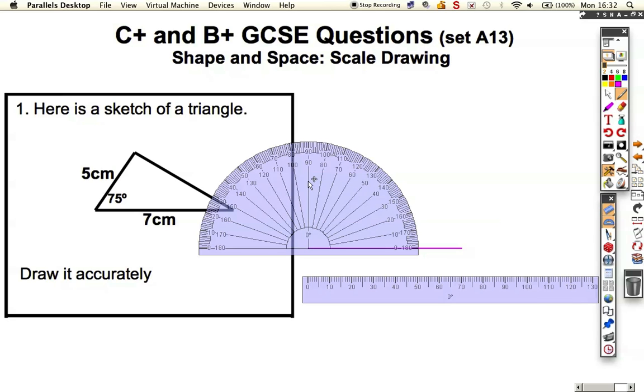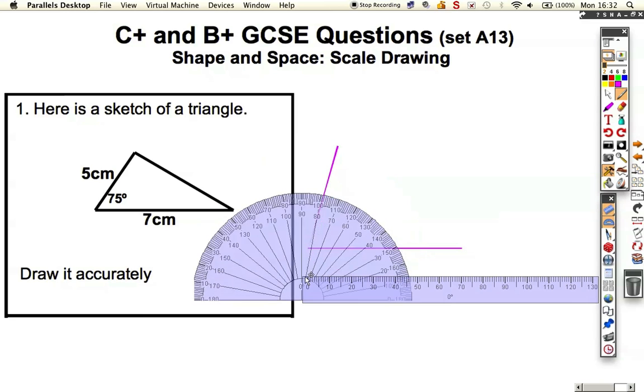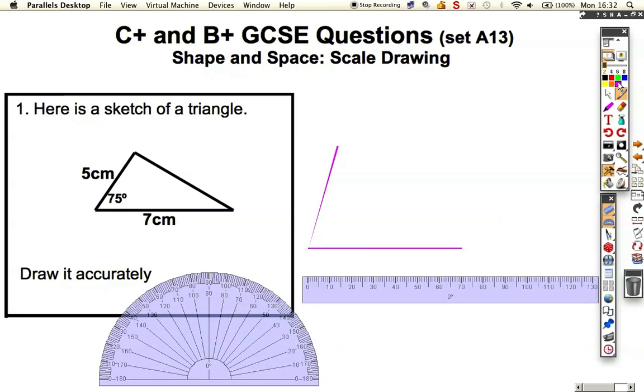I'm going this way around the protractor to get 75, so I've got to start from zero, counting on the inside. I want to go to 75 degrees, so I'm counting 0, 10, 20, all the way to 70. Now 75 is exactly in the middle here. I'm just going to put a little line there.